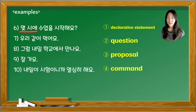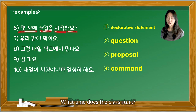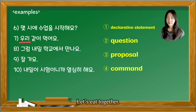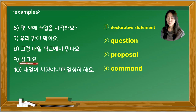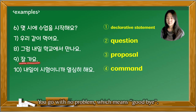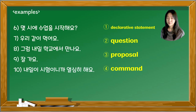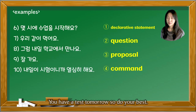Here are examples: 몇 시에 수업을 시작해요? — What time does the class start? 우리 같이 먹어요 — Let's eat together. 그럼 내일 학교에서 만나요 — Then let's meet at school tomorrow. 잘 가요 — Goodbye. 내일이 시험이니까 열심히 해요 — You have a test tomorrow, so do your best.